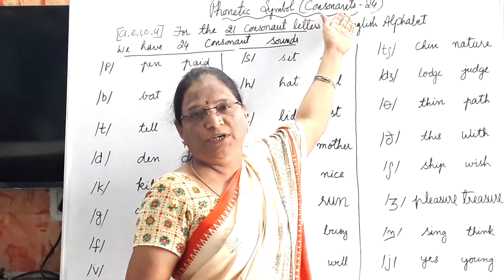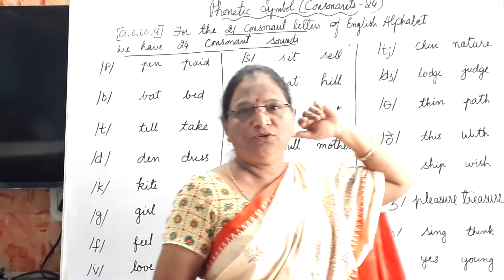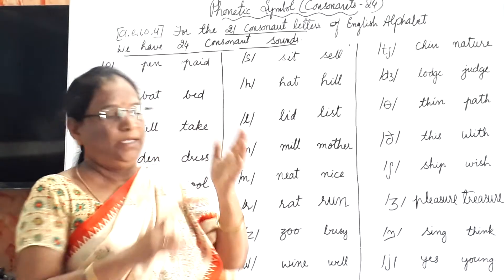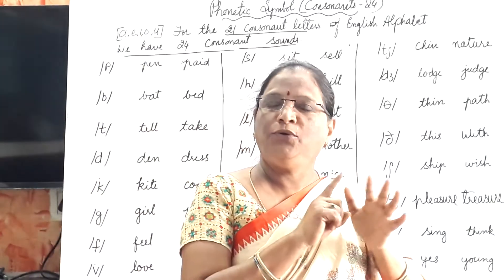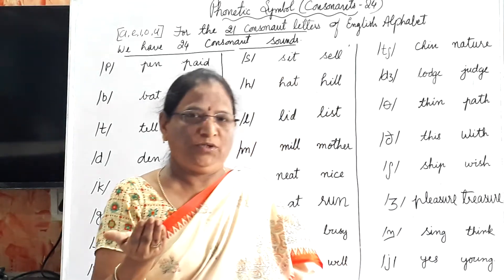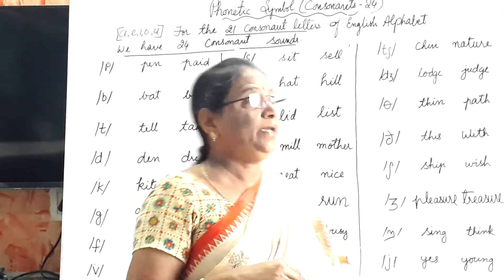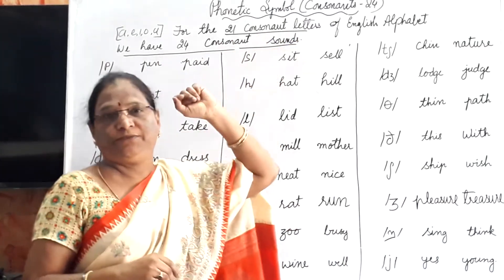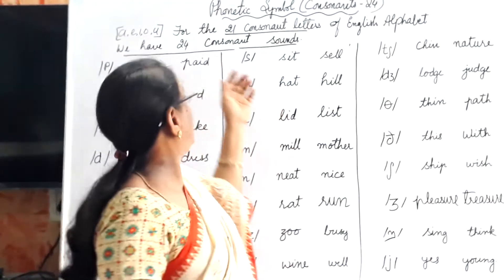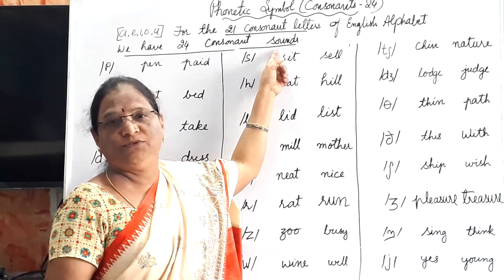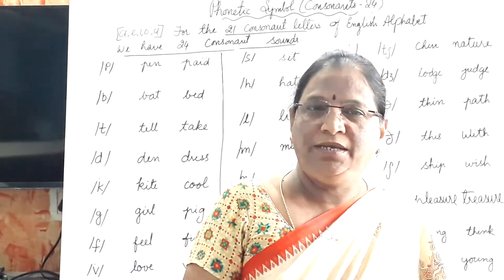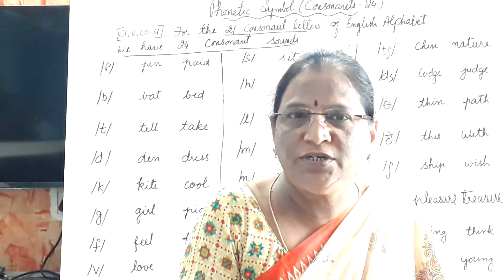As you all know, A E I O U — five letters produce 12 pure vowels and 8 diphthongs. The remaining 21 consonant letters produce 24 consonant sounds.